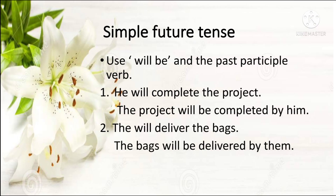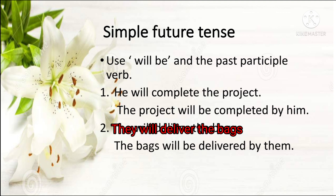The simple future tense is very simple — only use will be and the past participle verb. He will complete the project — the project will be completed by him. They will deliver the bags — the bags will be delivered by them.